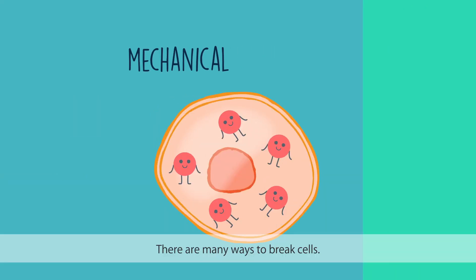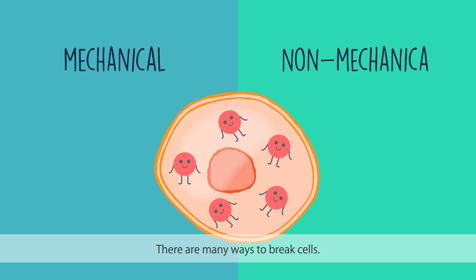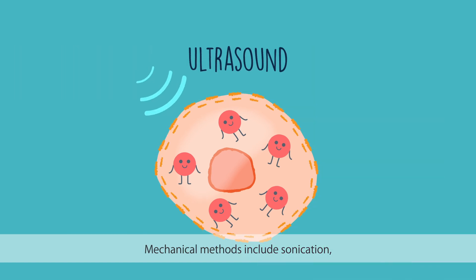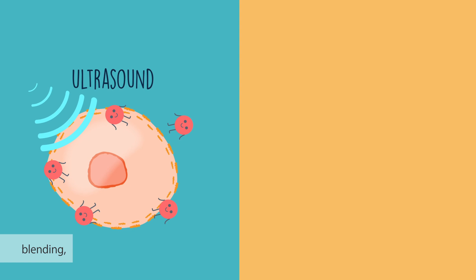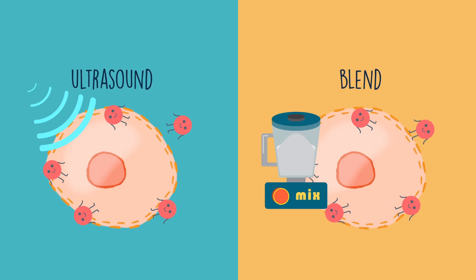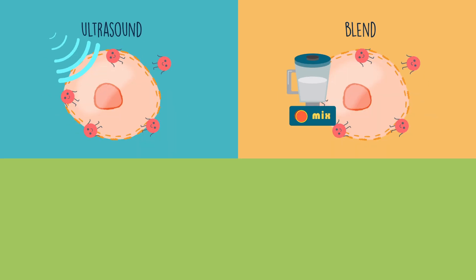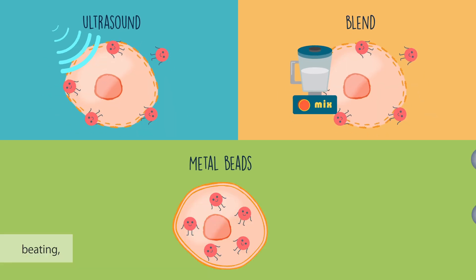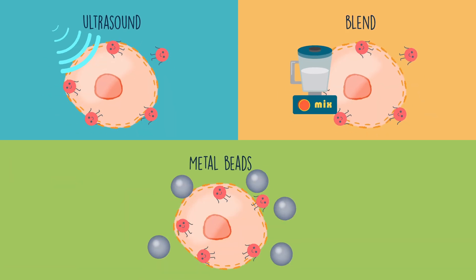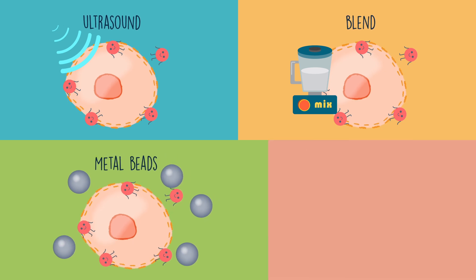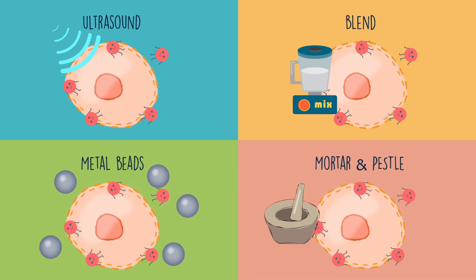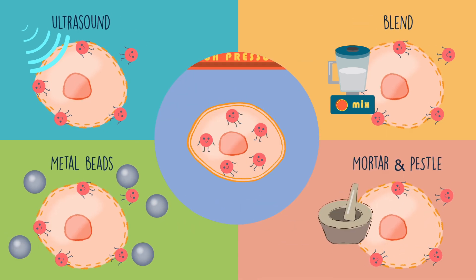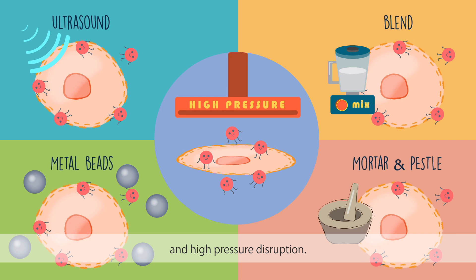There are many ways to break cells. Mechanical methods include sonication, blending, beading, grinding with mortar and pestle, and high pressure disruption.